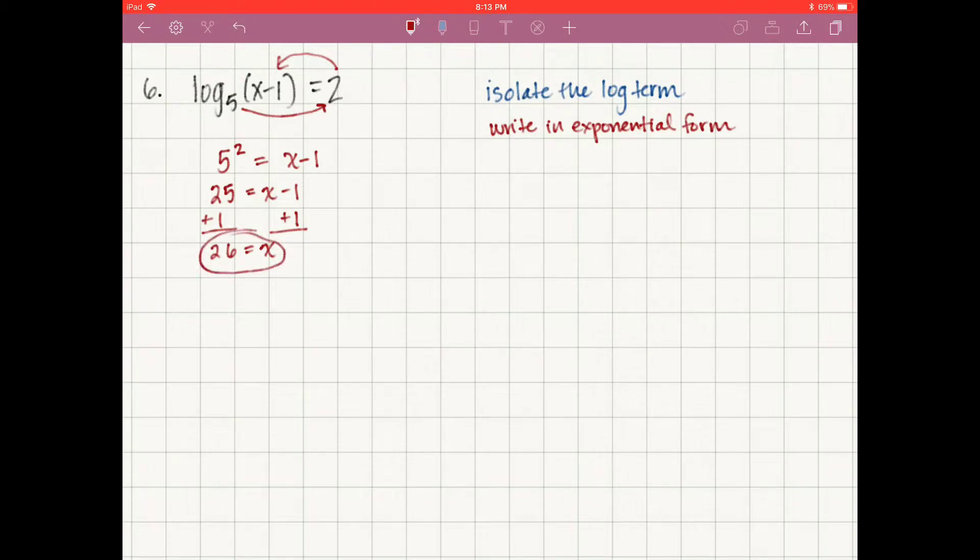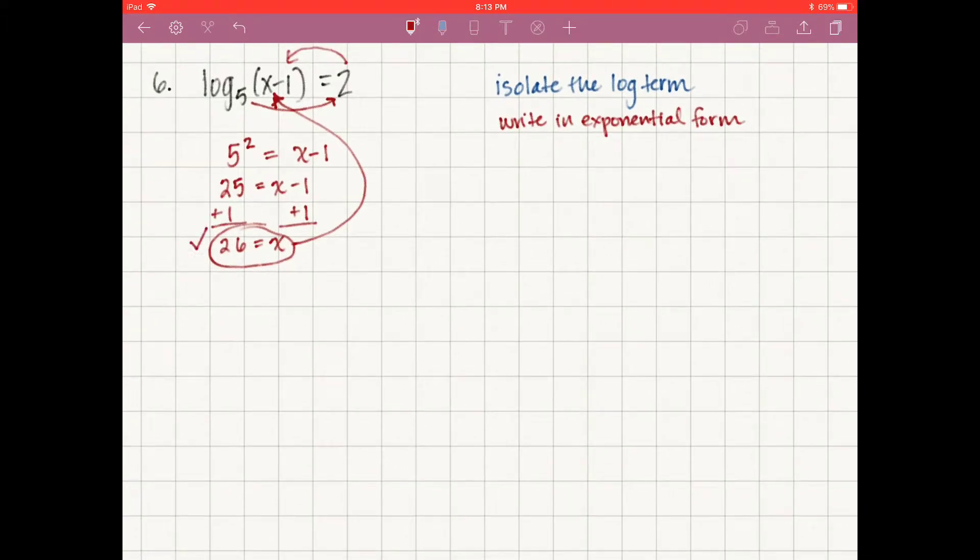Remember, we're going to take that value and put it back in to make sure it keeps the argument positive. If it makes the original argument negative, then it's an extraneous solution. 26 minus 1 is positive 25, so x equals 26 is our answer.